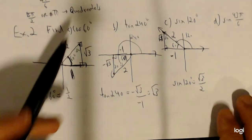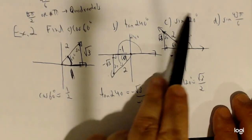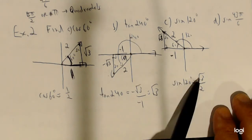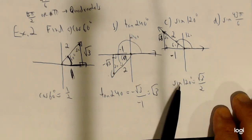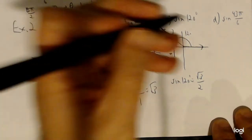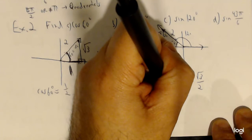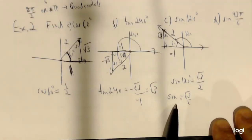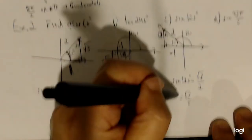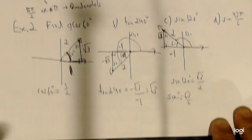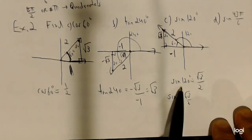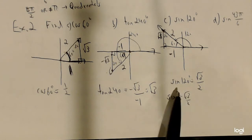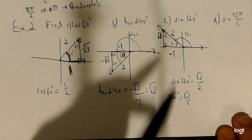It's important to always include the angle with your trig function. Never just write 'sine equals √3 over 2' — I'll ask, sine of what angle? You always have to include the angle with the trig function.